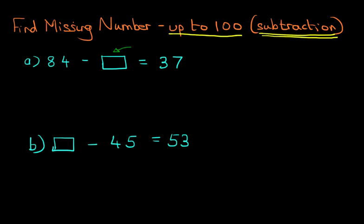Example one, all we have to do is to swap these two around. So we've got the missing number on one side, and on the other side we've got 84 minus 37. We are now ready to do the calculation.